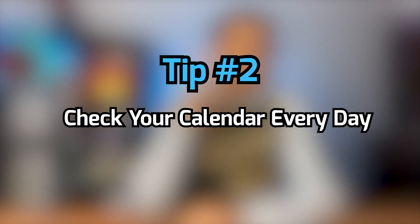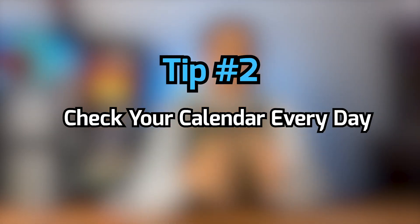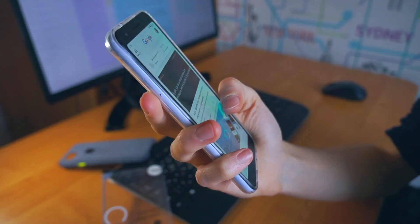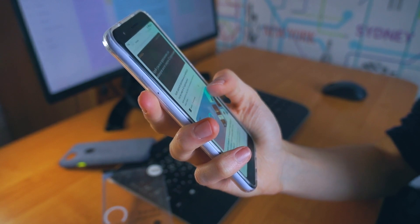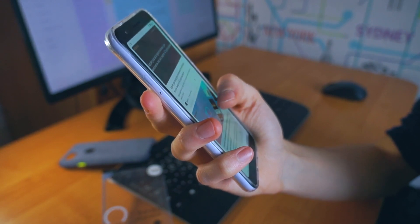Another tip to stay effective with your calendar and daily schedule is to check your calendar every single day. Whether you handwrite it or use Google Calendar, every morning you should be checking your calendar as part of your morning routine — because there's no point making one if you're not going to check it daily. Checking it regularly also helps you reduce unexpected things from happening.